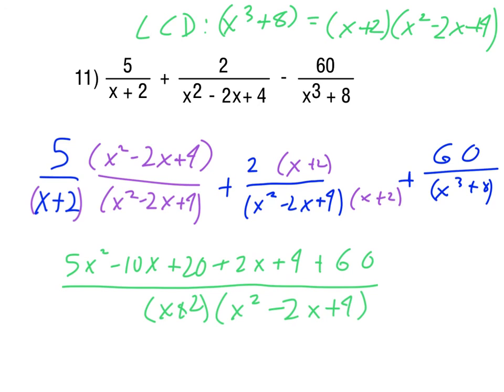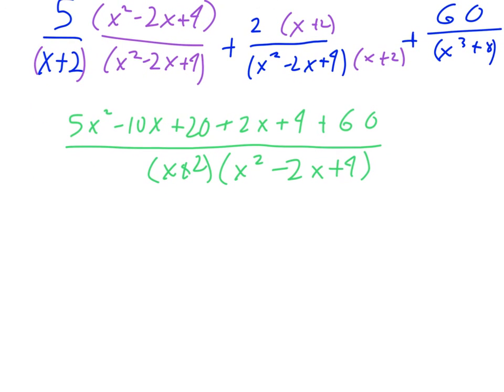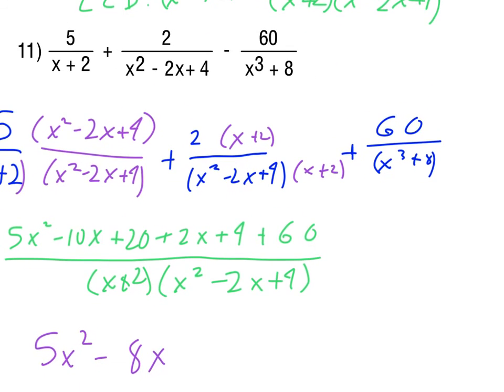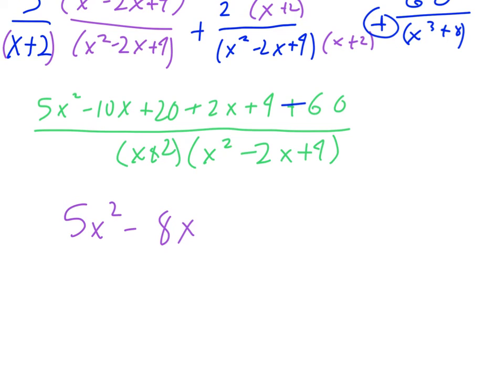In the numerator there, we would need to combine like terms. We only have the 5x squared. We have a minus 10x and a plus 2x, so that would be a minus 8x. Let's see, plus 20, plus 4, and plus 60. Oh, I thought that seemed wrong. For some reason I wrote a plus 60 there when it was a minus, so let me fix that here. So that would really be minus 60. And let's see, so 24 minus 60, so that will give us a minus 36.